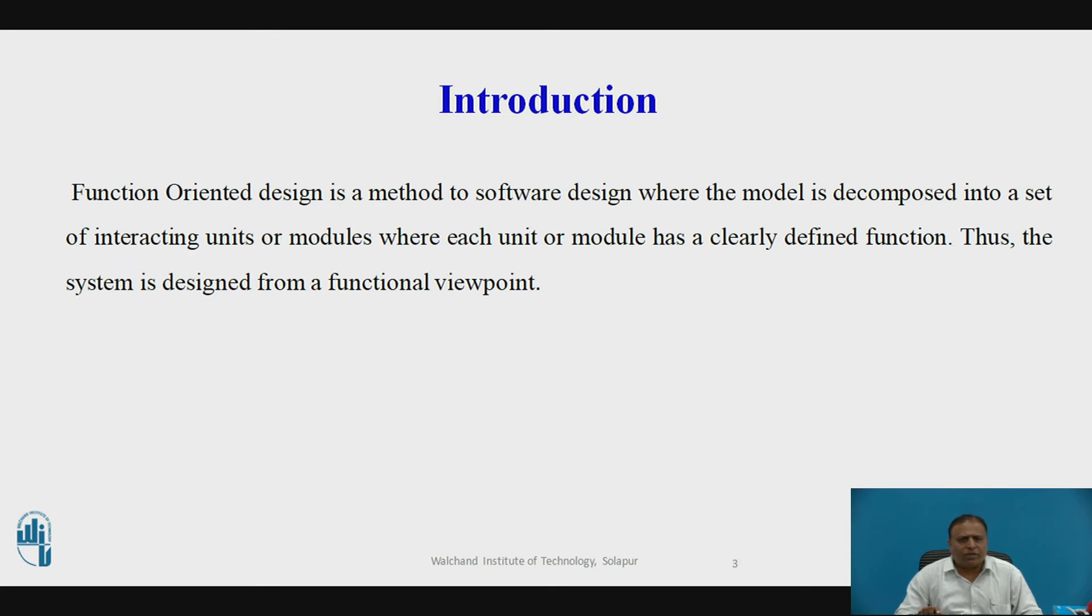The functional specification is a kind of guidance and ongoing reference point as the developer writes the programming code. Where a functional design provides the detail of what system should do, a technical design provides the details of how the actions should be performed. A technical design translates the human language of a functional design into specific characteristics of the database, programming and hardware and software requirements of the application.